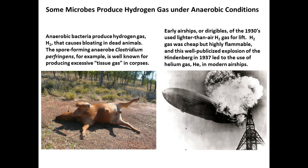Gas production under anaerobic conditions is very common. This poor dead animal — the bloat that they sometimes experience is from Clostridium perfringens. This organism also sometimes causes a condition referred to as gas gangrene. When organisms are dead, this spore-forming environmental organism can grow, ferment, and produce gas. If you're still alive and this is happening, you get a bubbly discharge from the wound. That's also why animals bloat if dead from this organism.